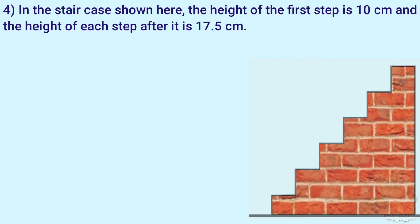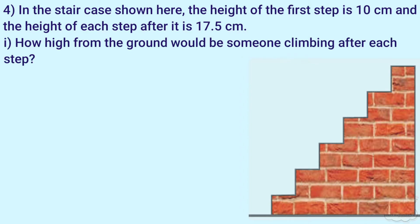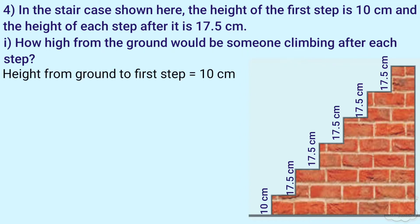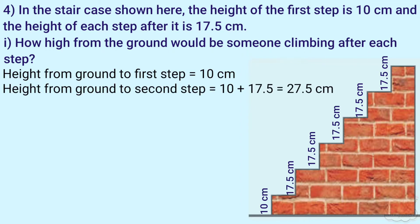In the staircase shown here, the height of the first step is 10 centimeters and the height of each step after it is 17.5 centimeters. First question: how high from the ground would someone be after climbing each step? The height at the ground level is 0. At the first step it is 10 cm. At the second step it is 10 plus 17.5, that is 27.5 cm.